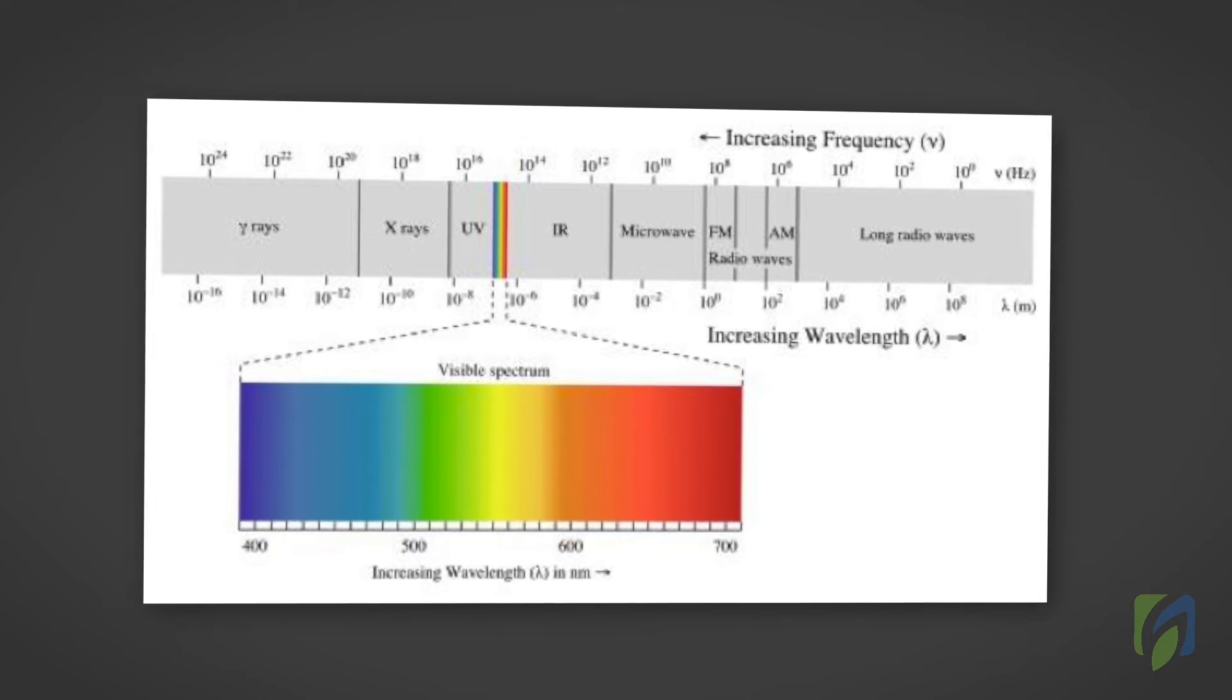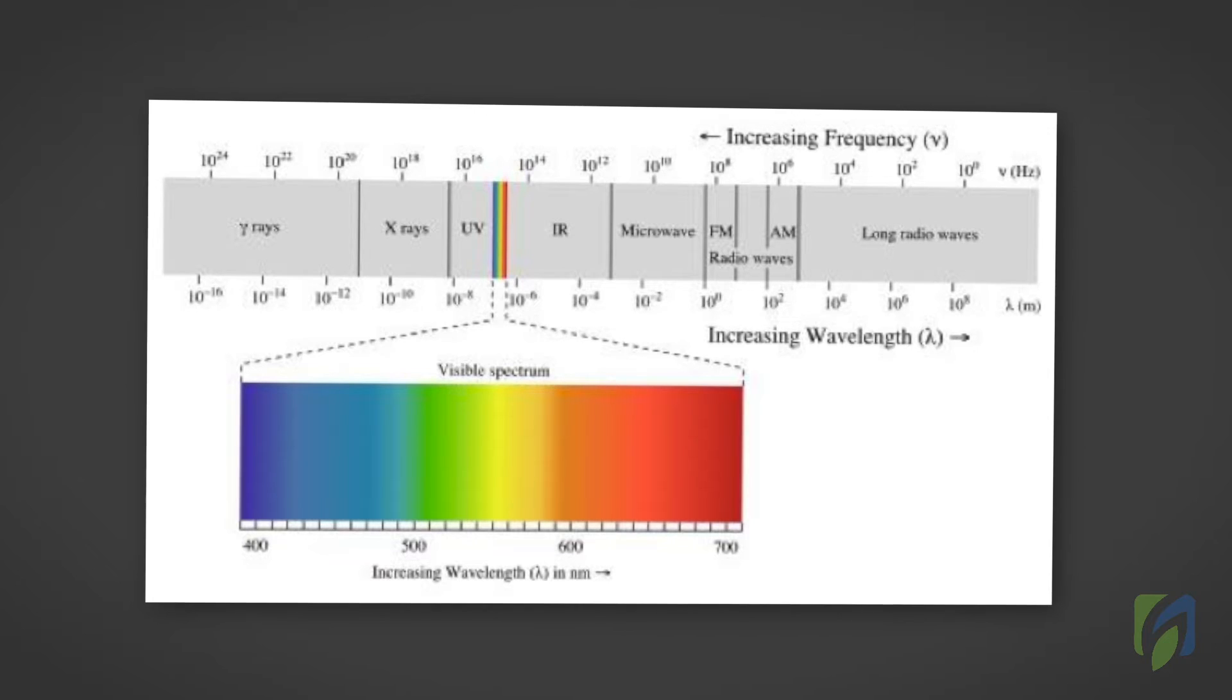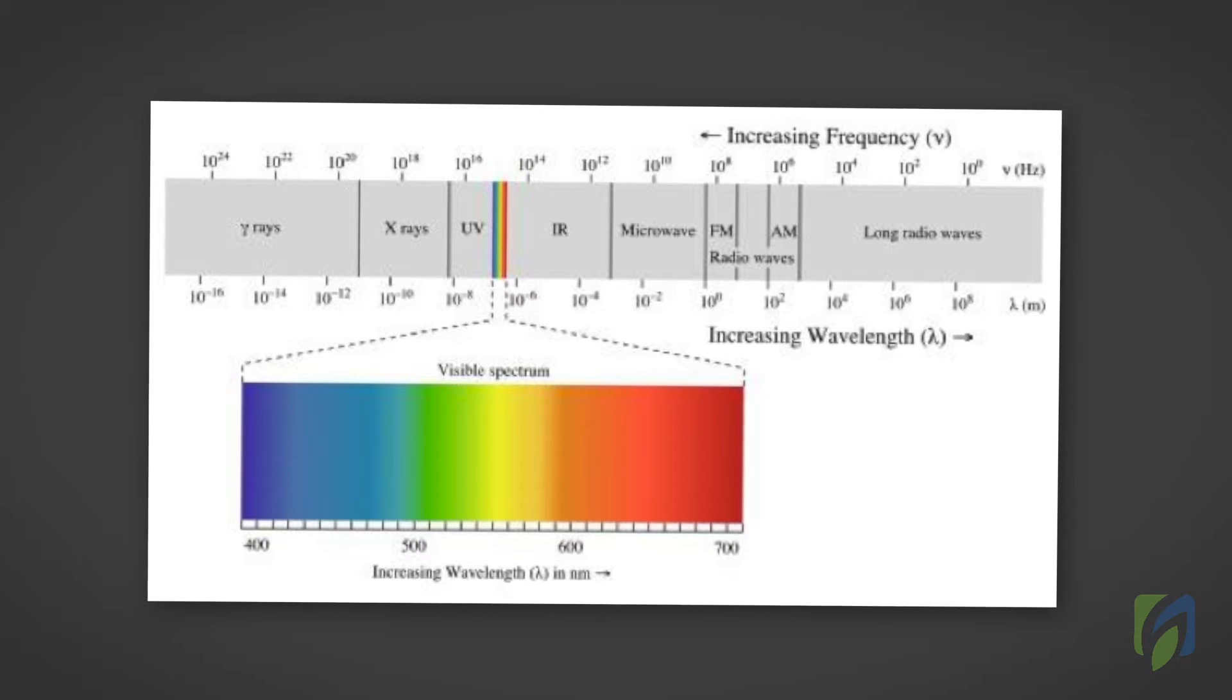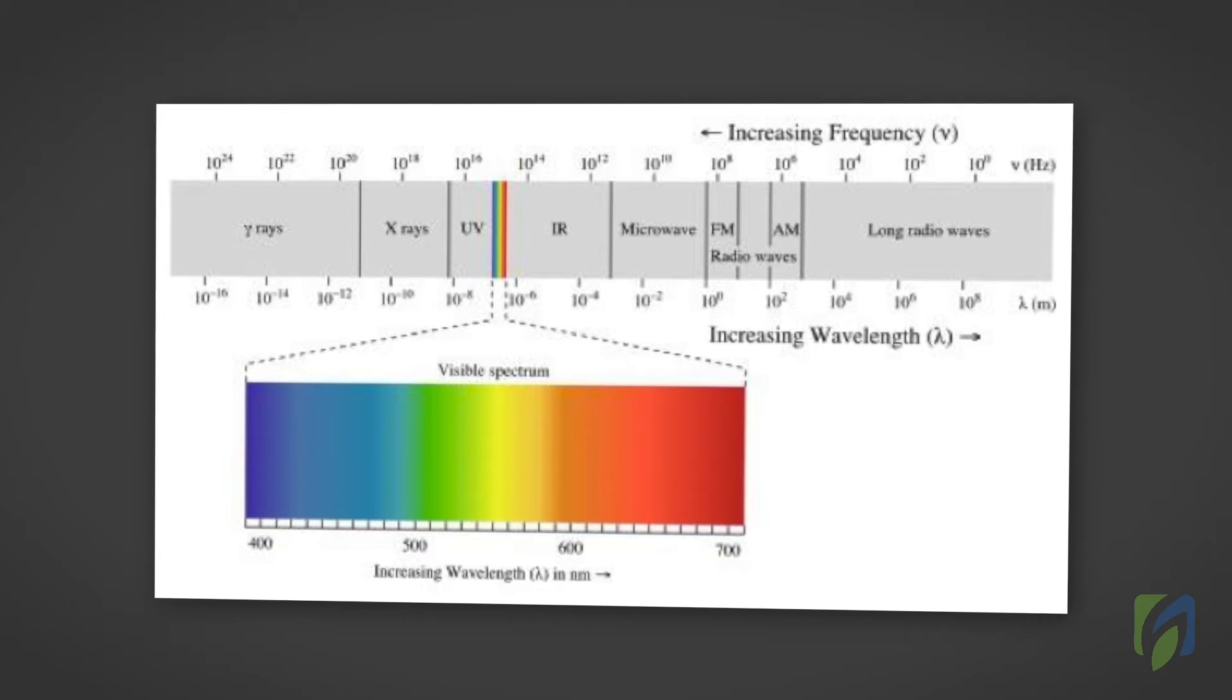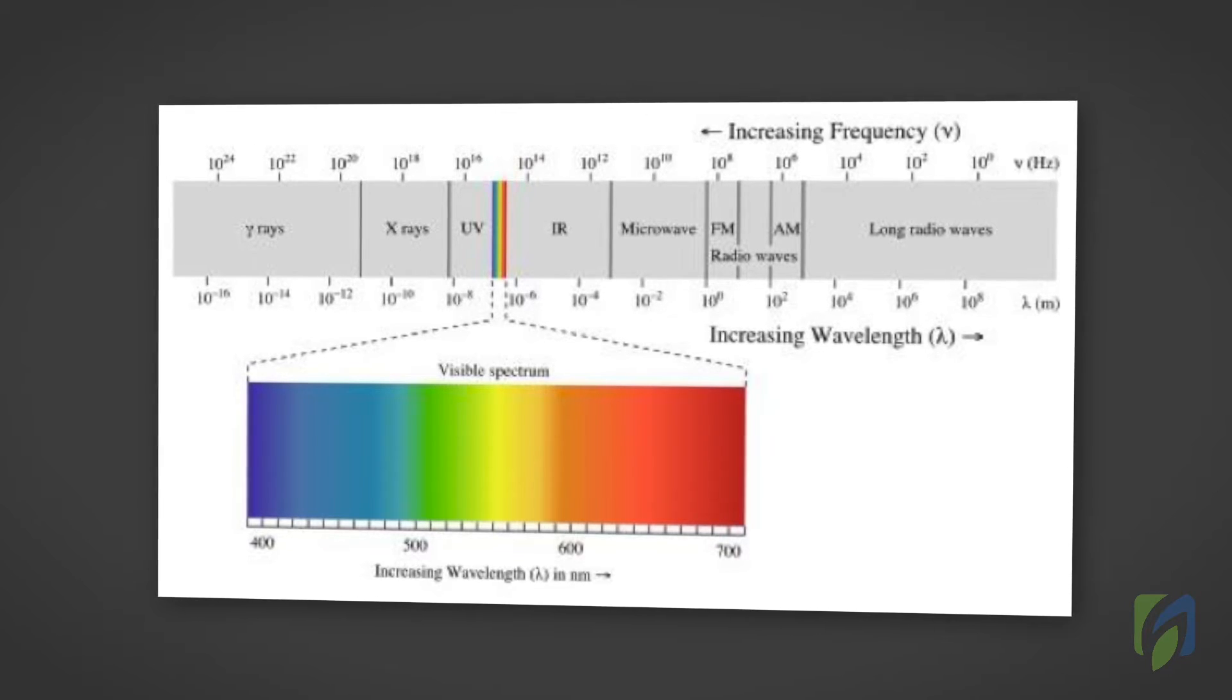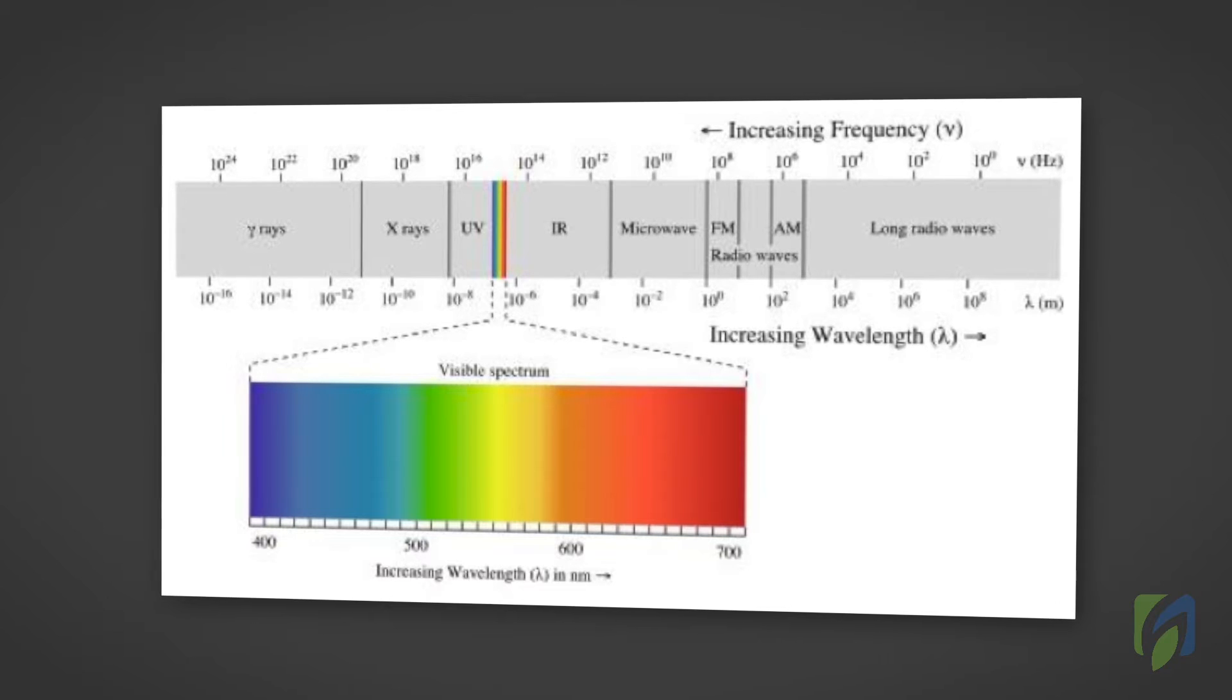Visible light consists of wavelengths in a range from about 380 nanometers to about 740 nanometers. The visible light range is located between the invisible infrared, which is found at longer wavelengths, and the invisible ultraviolet, which is found at shorter wavelengths.